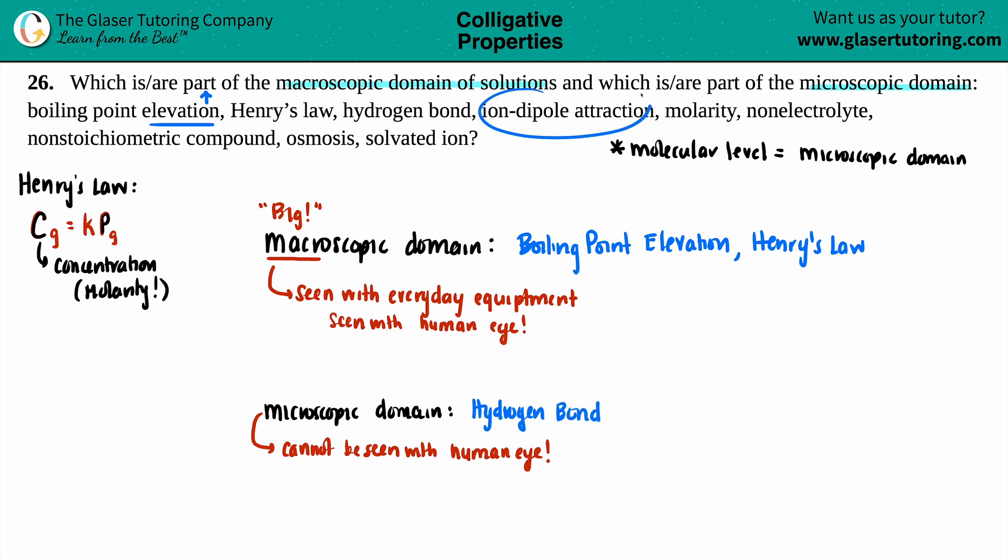Next, we got ion-dipole attractions. These are types of intermolecular forces. Hydrogen bond, intermolecular force. Ion-dipole attraction, intermolecular force. That is at the molecular level, any type of intermolecular forces. I mean, they have the word molecule, molecular, in them. So all your intermolecular forces, they are way too small to be seen with the human eye. You can't use everyday lab equipment. So once again, this ion-dipole attraction is going to be in the microscopic domain.